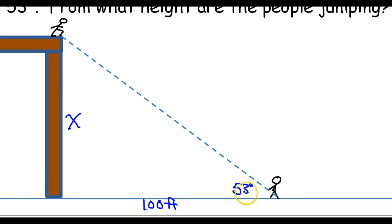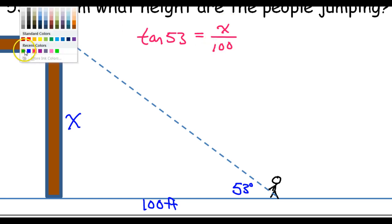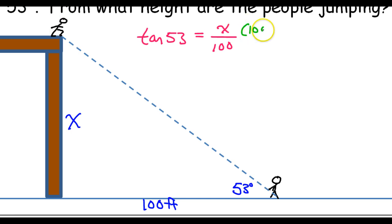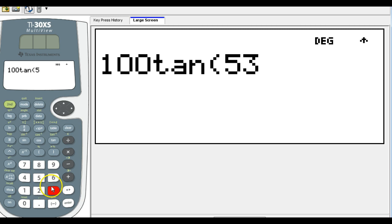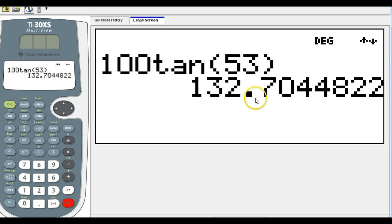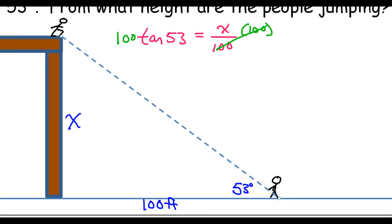So, what are we doing here? Opposite over adjacent. This looks like a job for tangent function. So, the tangent of 53 degrees is equal to opposite over adjacent. So that's x over 100. To get this by itself, we are going to multiply both sides by 100. So those will cancel out. This is basically going to be the answer. 100 tangent 53. That is 132.70 feet.